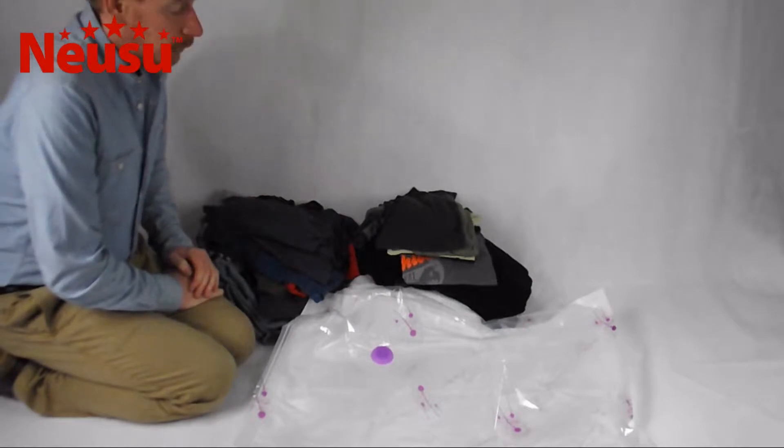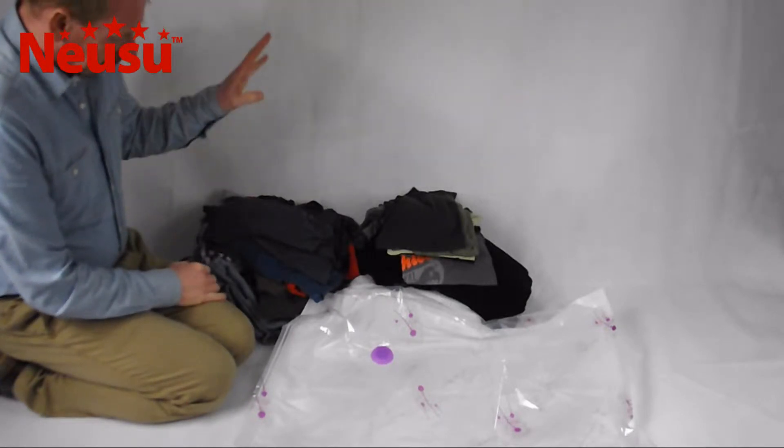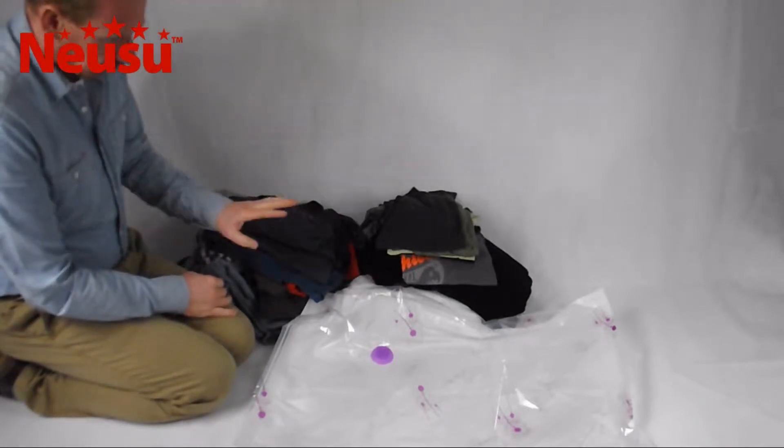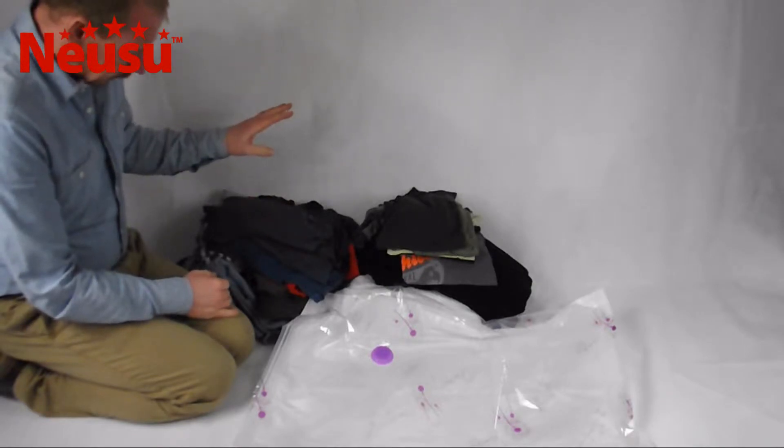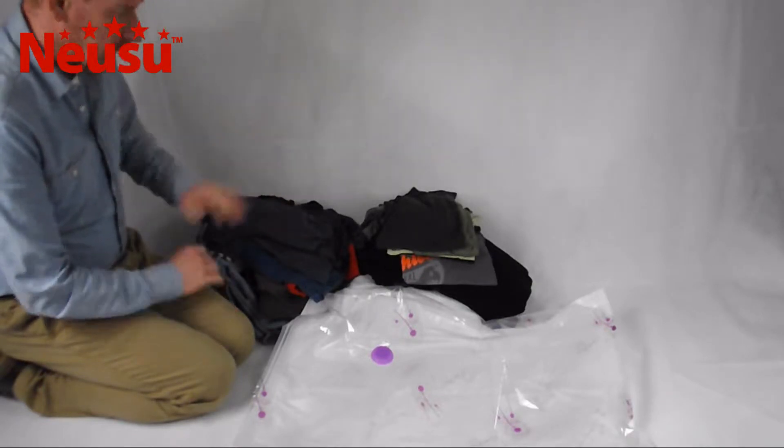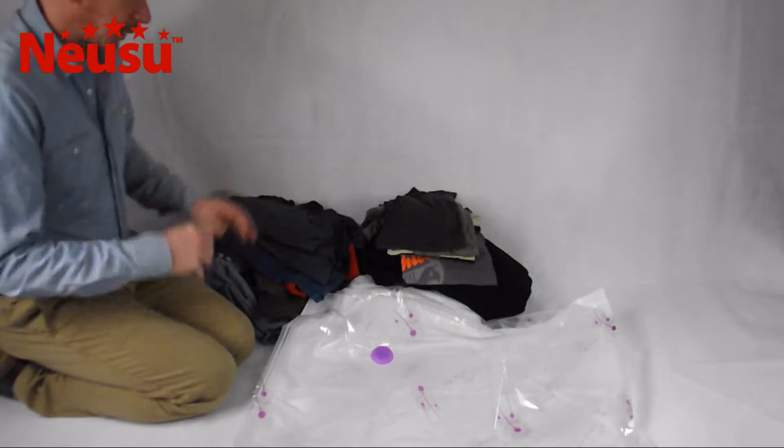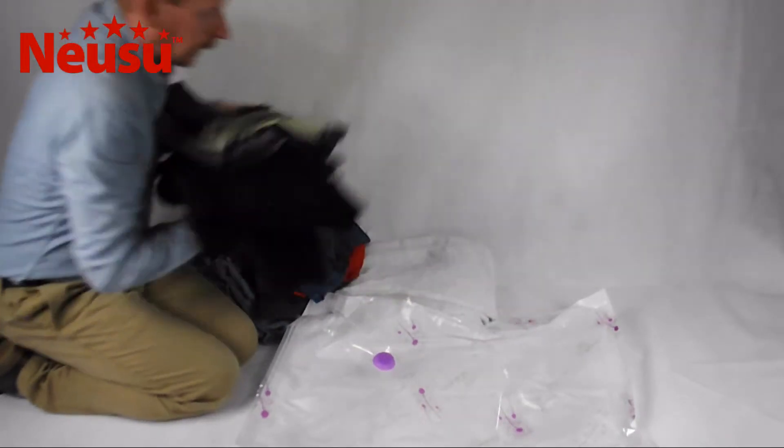So an 80 by 60 vacuum bag. What we've got here is about 18 t-shirts, three large towels, and three to four bulky winter jumpers. So let's start getting these in here.